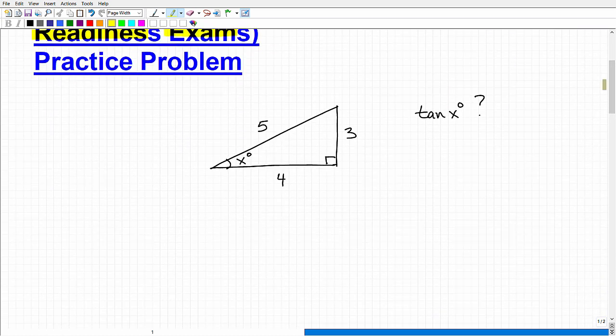But let's get to this problem here. So here I have a right triangle. You can see the lengths of the sides are 3, 4, and 5, and I have an angle down here, it's angle x.